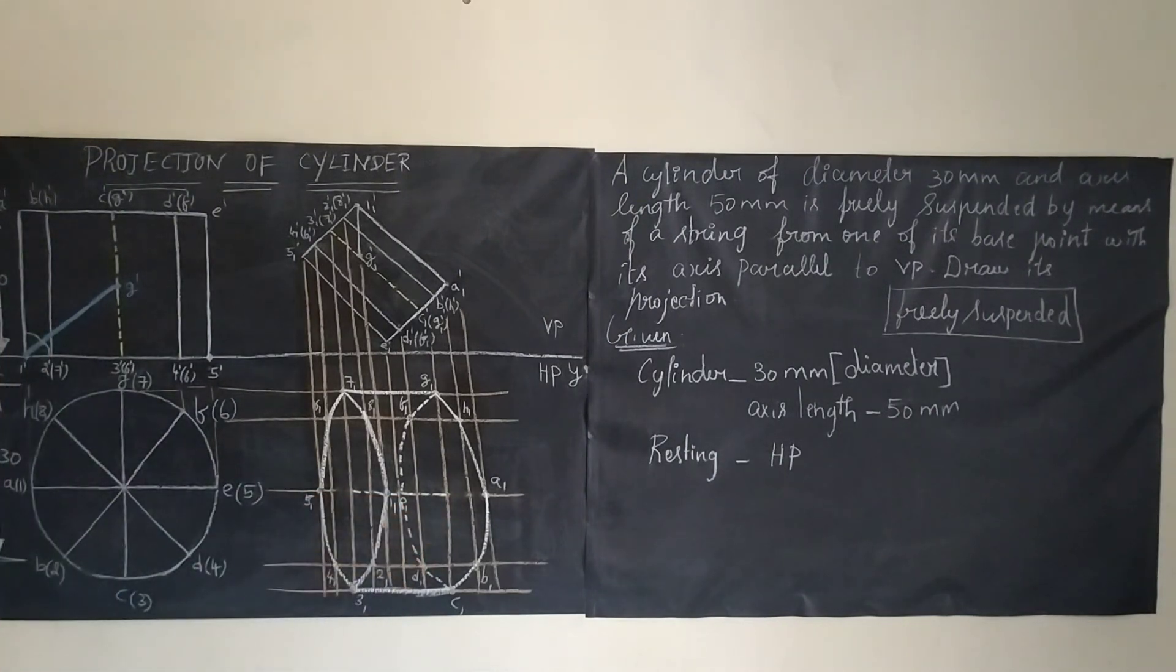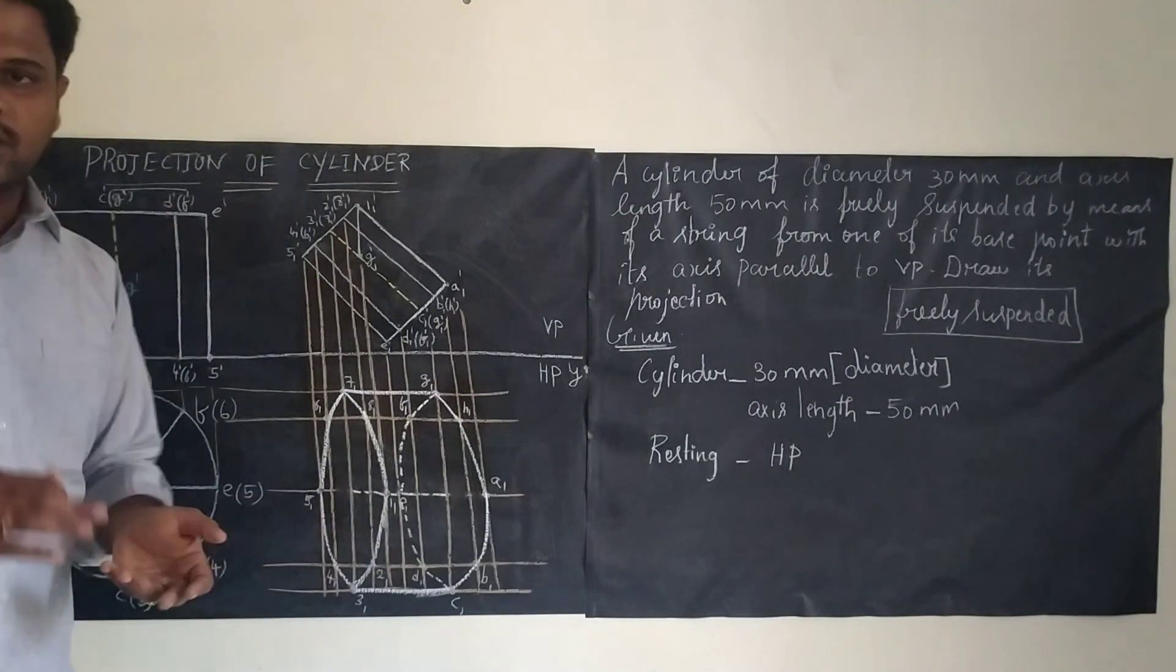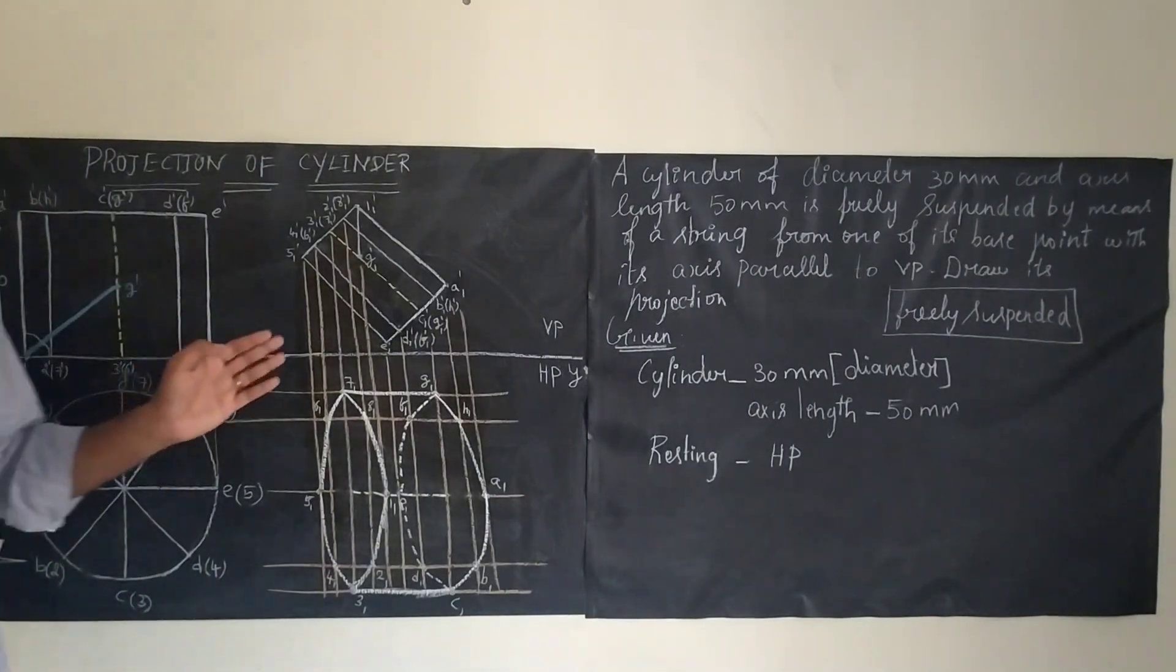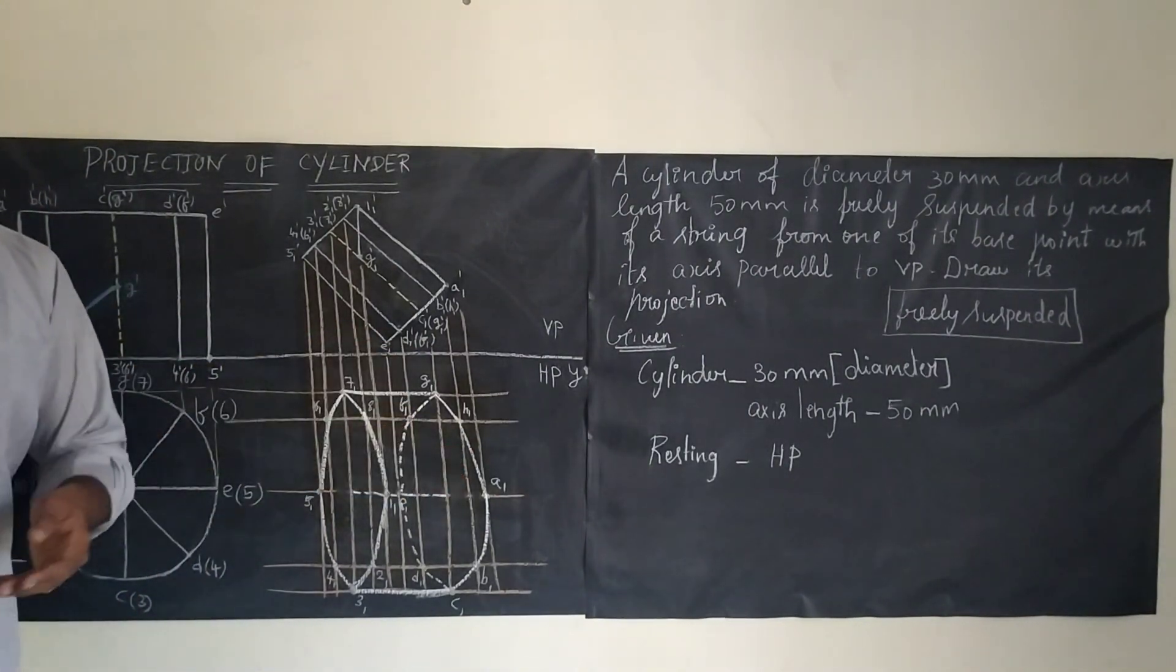We need to draw an axis. For dimension, we have to dimension the height axis length 50 mm and diameter as phi 30. The diameter symbol is very important. Heading is projection of cylinder. Here height of the text should be 10 mm, and at last we need to write all dimensions. Here only dimensions should be written in the right bottom corner. Height of the text should be 5 mm.